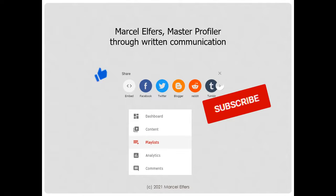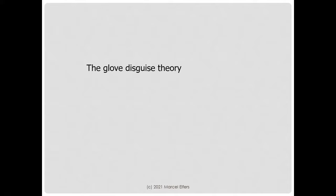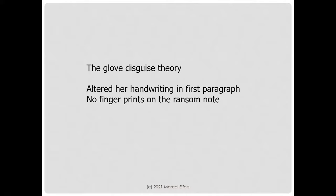There is a theory out there that the handwriting was altered and disguised because of wearing a glove. That makes sense to a certain part because her handwriting was altered in the first paragraph and there were no fingerprints on the ransom note, and that would explain that.